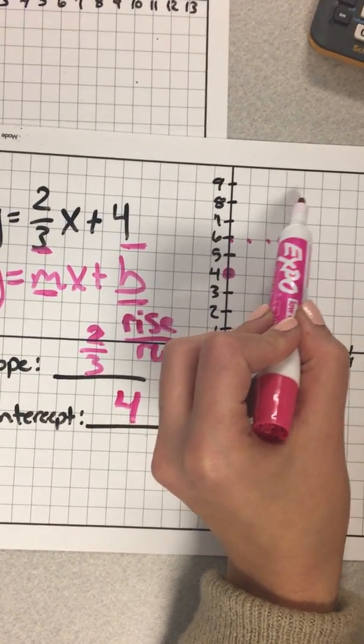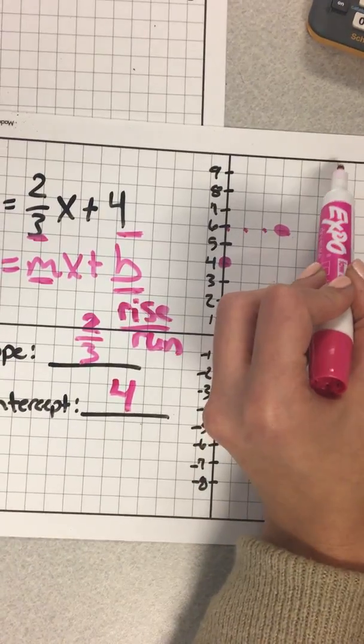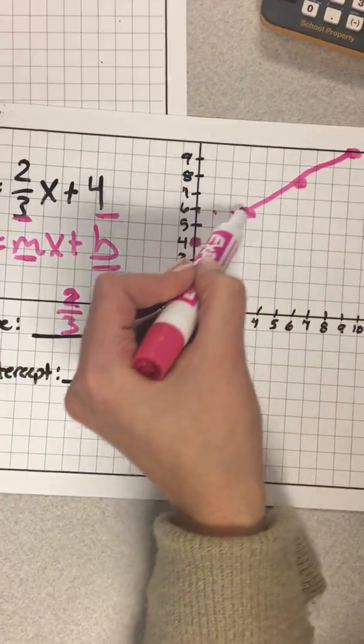I'm going to rise 2, and then I'm going to run 3. Do it one more time. We're up 2 over 3. And we have enough points to make a line.